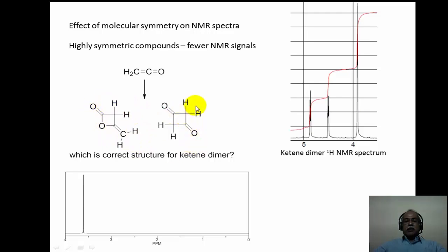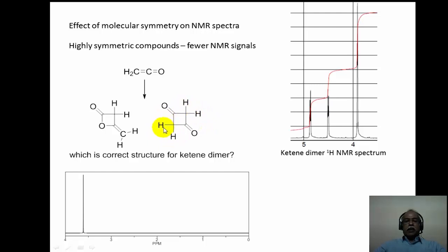The other possible diketone structure is highly symmetrical, with a plane of symmetry and a C2 axis making all four hydrogens chemically equivalent. Therefore, it is expected to give only a singlet, and indeed it does show only a singlet around 3.6 ppm in the NMR spectrum.